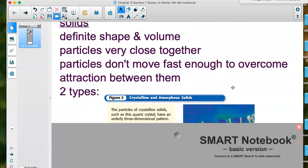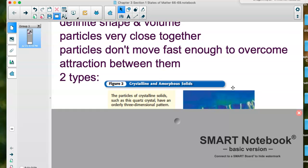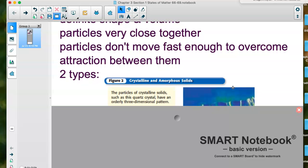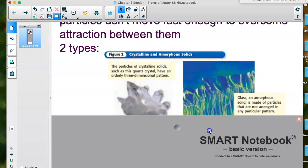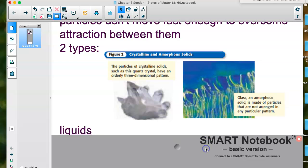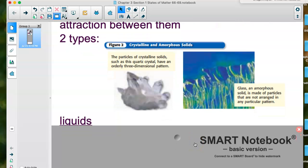When we talk about those particles being very close together, and they don't move fast enough to overcome the attraction between them, we can look at what we call crystalline and amorphous solids. On the left, that's a crystalline solid. That would be something like quartz, which is sometimes used in our homes for different things. On the right, that's an amorphous solid. That's glass. It has all these particles that are not arranged in a certain pattern.